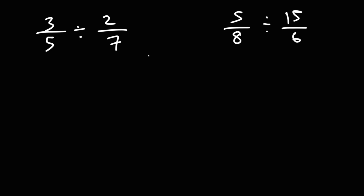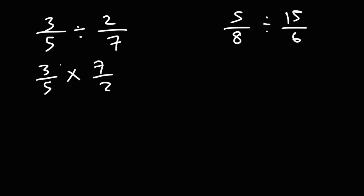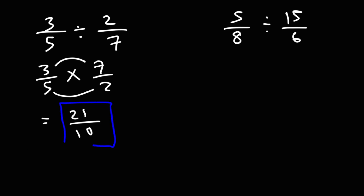We're going to keep the first fraction the same, change division to multiplication, and then flip the second fraction. These two operations are equivalent. Now we can multiply across: 3 times 7 is 21 and 5 times 2 is 10. So the answer as an improper fraction is 21 over 10.